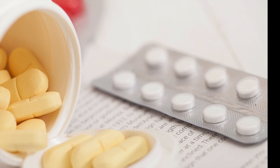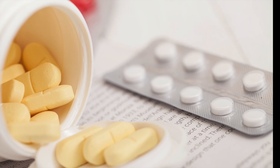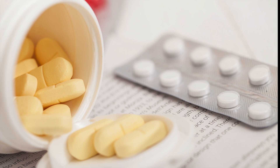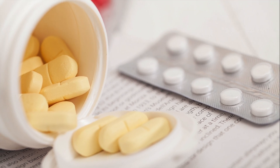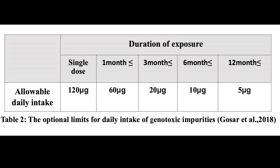Keeping in mind that not all medications are used for long-term treatment, Miller proposed a new concept: the length of exposure is a key element influencing the probability of a carcinogenic response. This table shows the optional limits for daily intake of genotoxic impurities — for example, if the duration of exposure is one month, the allowable daily intake would be 16 micrograms.